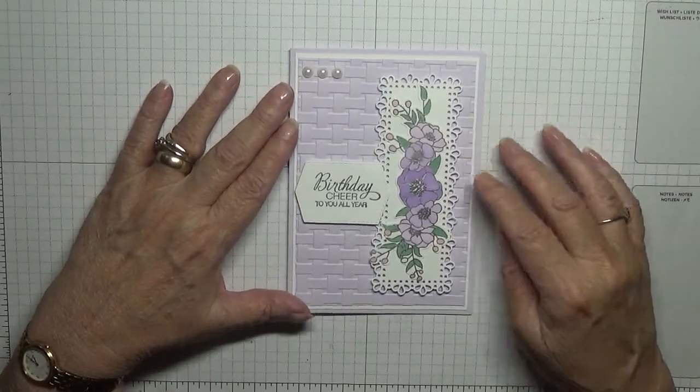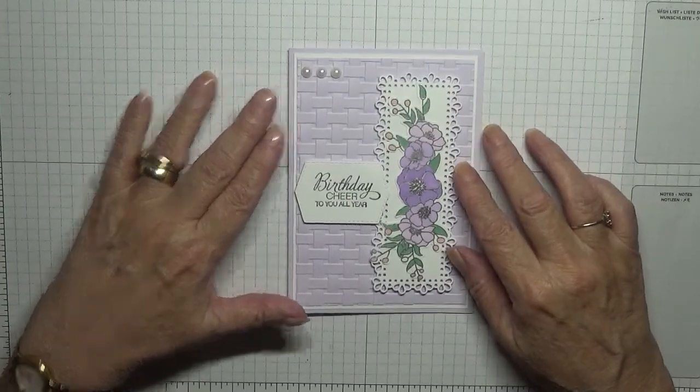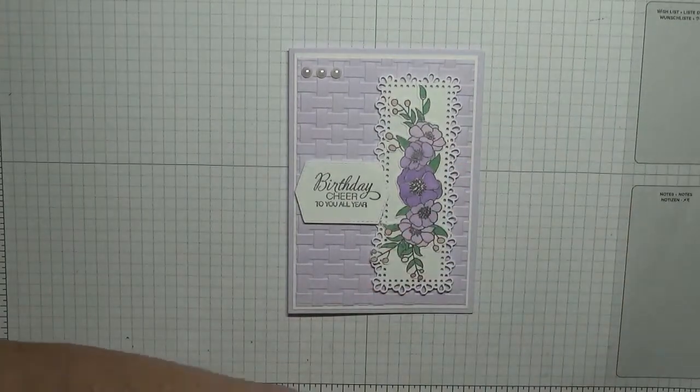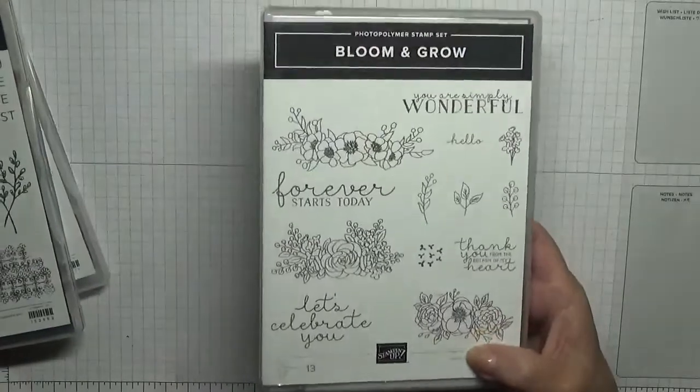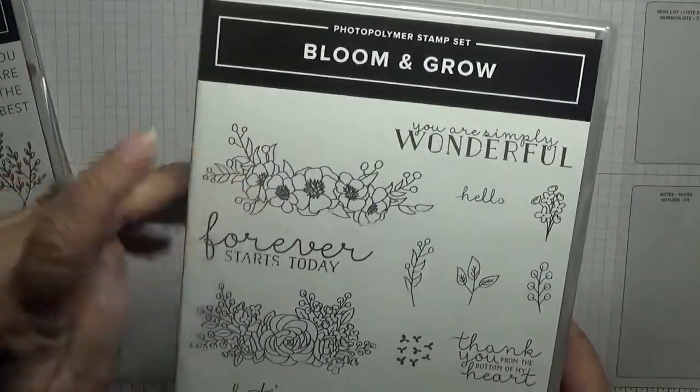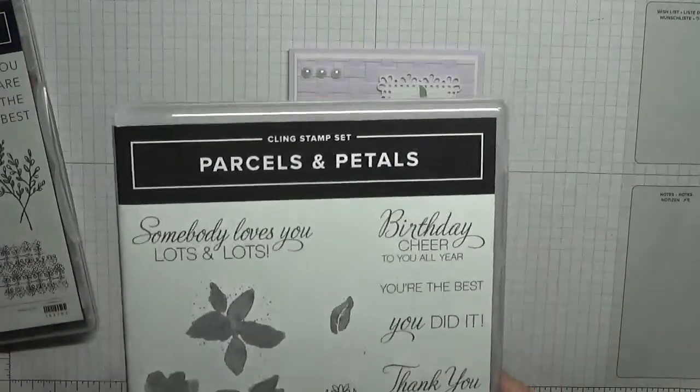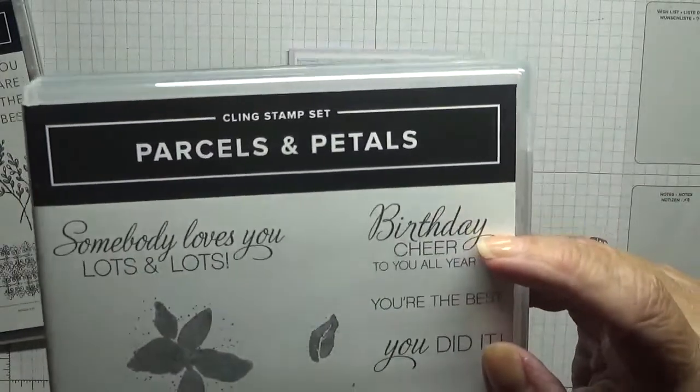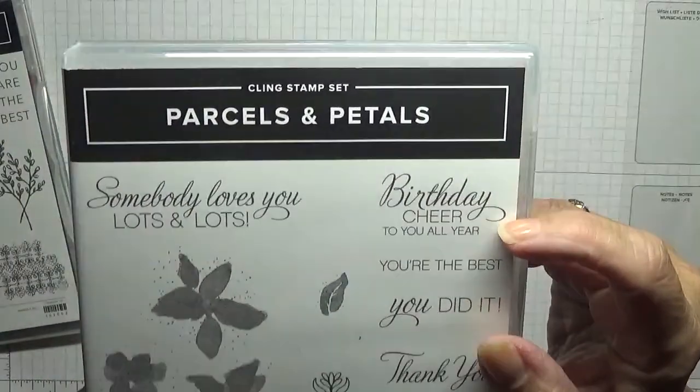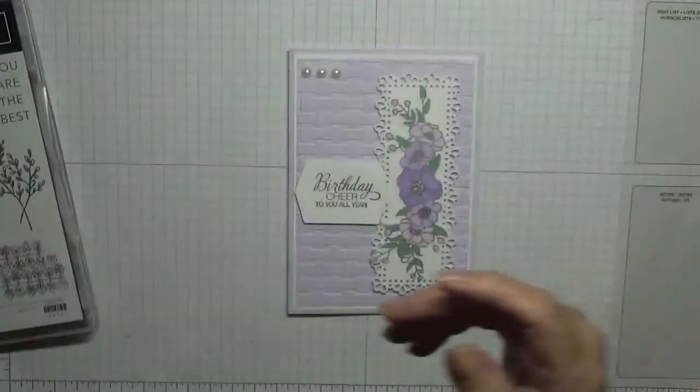Hi George Burns here. Today I'd like to show you how I made this card. To make this card I used three stamp sets. First one is Bloom and Grow and I used that image. The second one is Parcels and Petals and I used that image, Birthdays Cheers for You All Year.